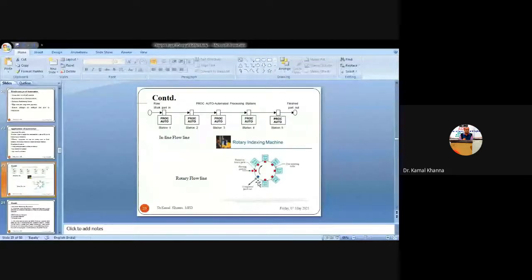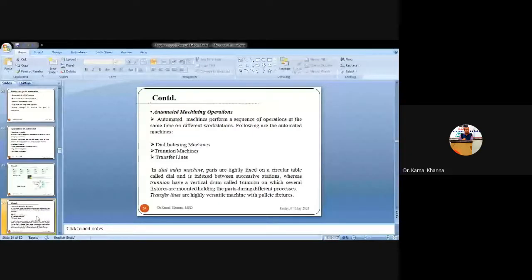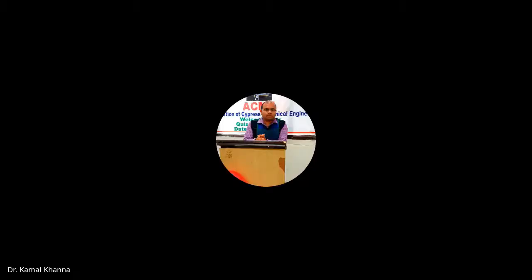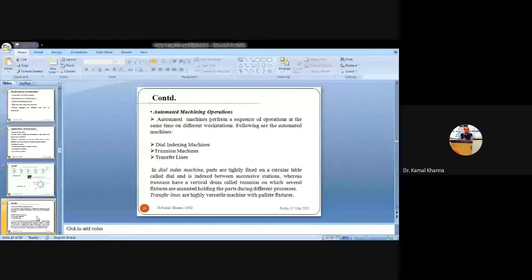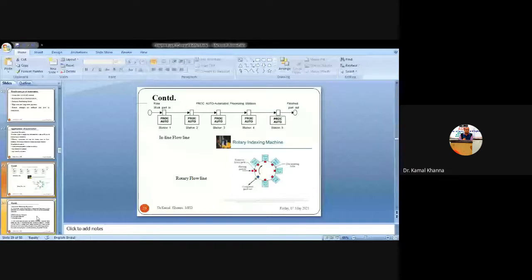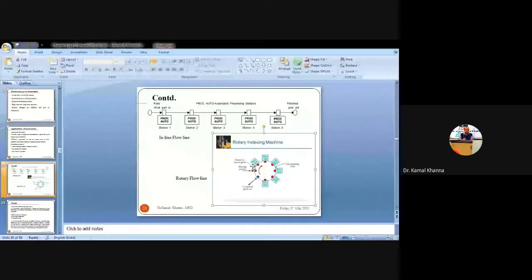The second application is automated machining operations. There are different kinds of operations required at different times, and there is always variation in the sequence of operations if there is a change from the market or consumer side. Automated machines perform a sequence of operations at the same time on different workstations. The first type is dial indexing machines — these are the machines installed in rotary flow lines, where the table rotates, the machines are fixed, and certain operations are performed on the specimen.